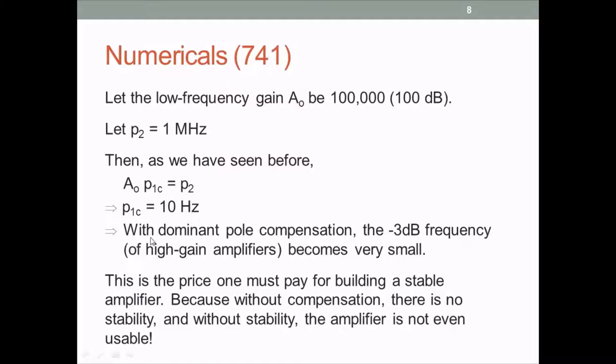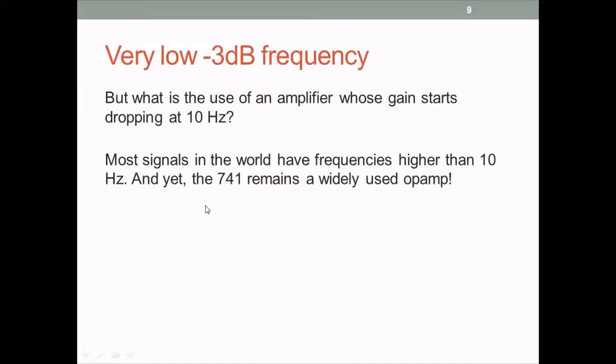When we do dominant pole compensation the minus 3 dB frequency becomes very small — 10 Hz is a very small number. Nobody wants an amplifier with a 3 dB frequency of 10 Hz, but we don't have a choice. If we don't compensate, the amplifier doesn't work at all — it's useless. To make it useful we have to do this compensation and live with it. This is the price we pay to have an op-amp that works under negative feedback without oscillating.